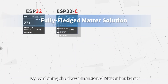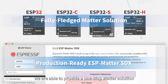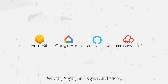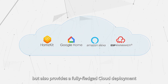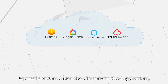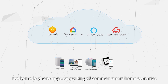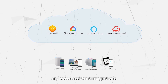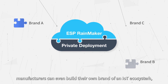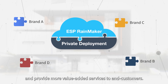Espressif's AIoT cloud platform, ESP Rainmaker, can provide cloud services to Matter devices and enable cloud-based management of Matter devices' massive data resources. By combining Matter hardware and software solutions with ESP Rainmaker, we provide a one-stop Matter solution that supports connectivity on Amazon, Google, Apple, and Espressif devices, while also providing fully-fledged cloud deployment through customers' own private accounts. Espressif's Matter solution also offers private cloud applications, ready-made phone apps supporting all common smart home scenarios, and voice assistant integrations. Relying on the privatization feature of ESP Rainmaker, manufacturers can even build their own branded IoT ecosystem and provide more value-added services to end customers.